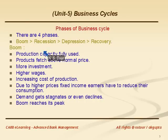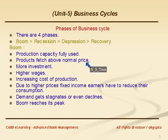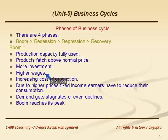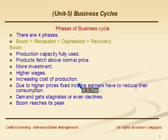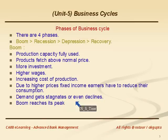To recap the features of boom: production capacity is fully utilized; products fetch above normal price; there is more investment in capital goods; higher wages are paid; all this increases cost of production. Because of increased cost of production, goods become expensive and fixed income earners have to reduce their consumption. As a result, demand gets stagnated or even declines. This is the peak time for boom.